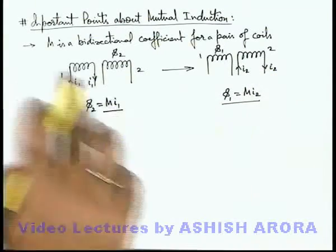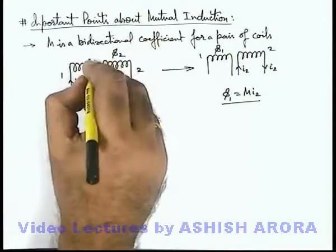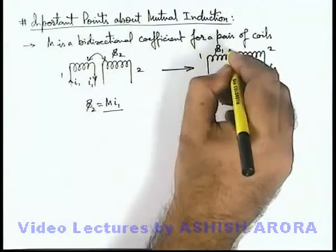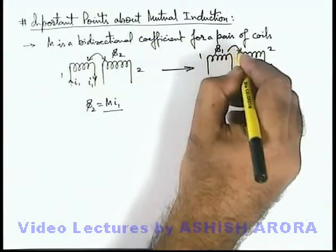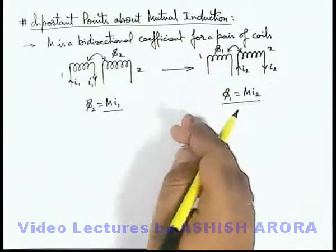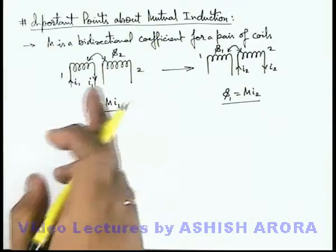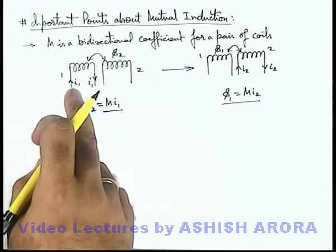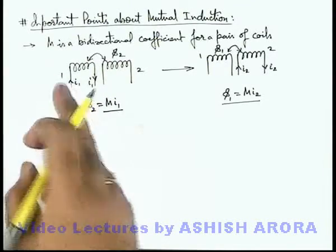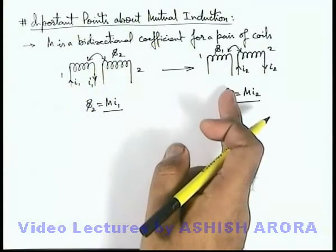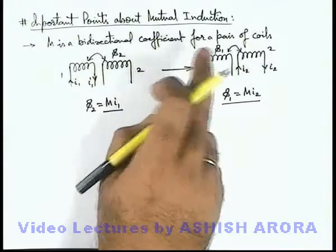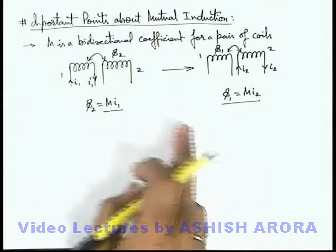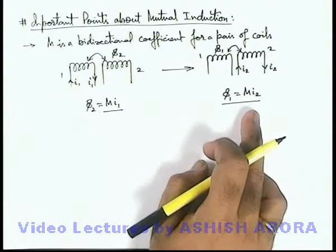That is why we call it a bi-directional coefficient — it is defined for the pair and can be applied in either direction: either for calculation of flux in the second coil due to current in the first coil, or for calculation of flux in the first coil due to current in the second coil. So always remember this.